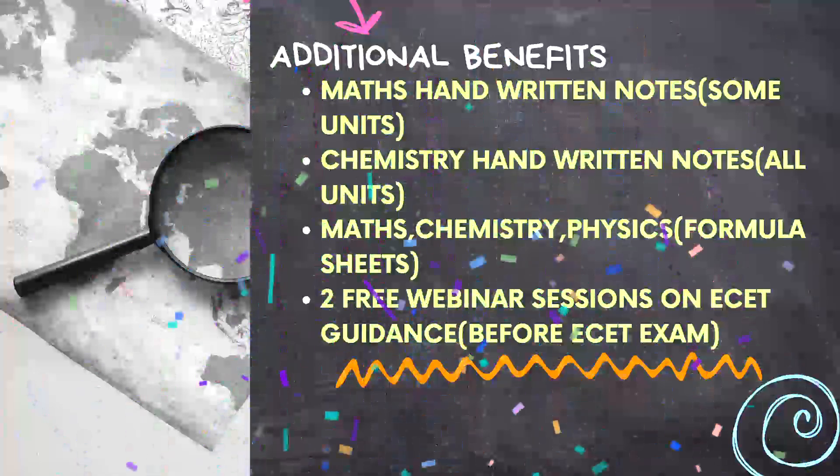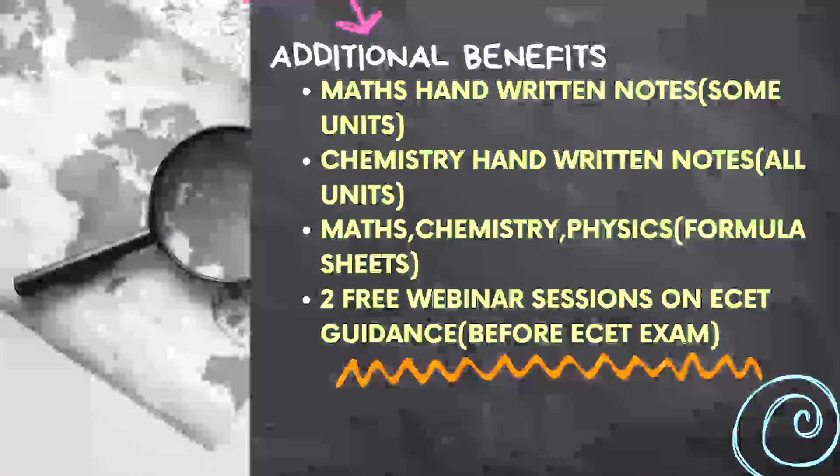Additional benefits — what does the best test series include? Maths Handwritten Notes system. Chemistry Handwritten Notes for almost every unit. That's why we upload PDFs. Maths, Chemistry, Physics, and Formula Sheet System. If you have an EAPCET exam — any tips, etc. We also have two or three webinar sessions, and I will contact you with the webinar sessions.